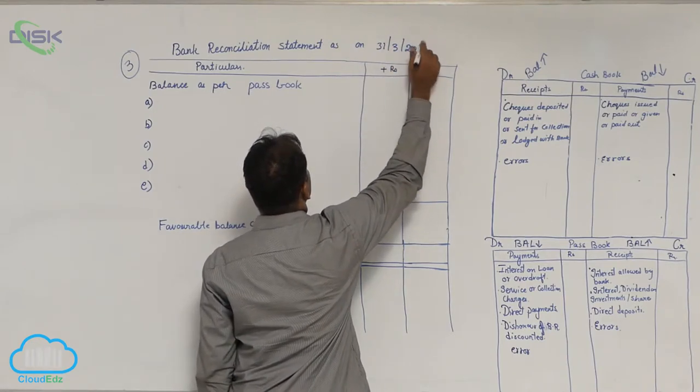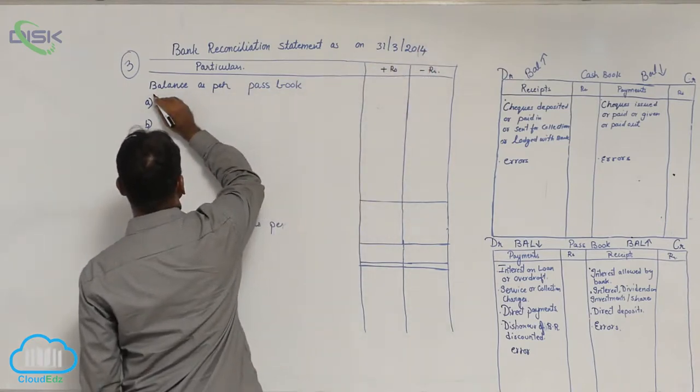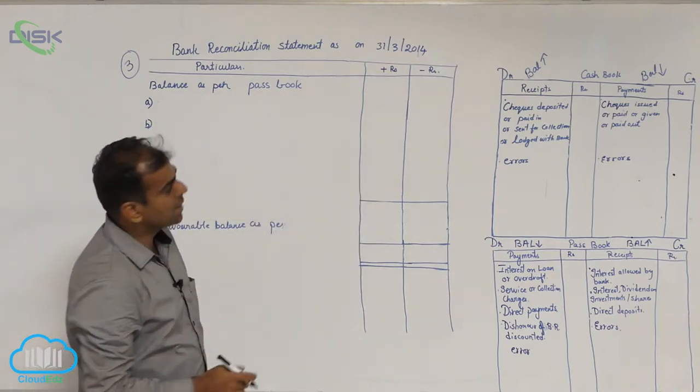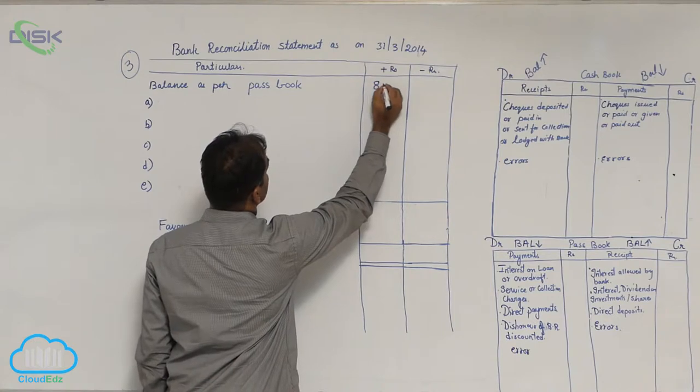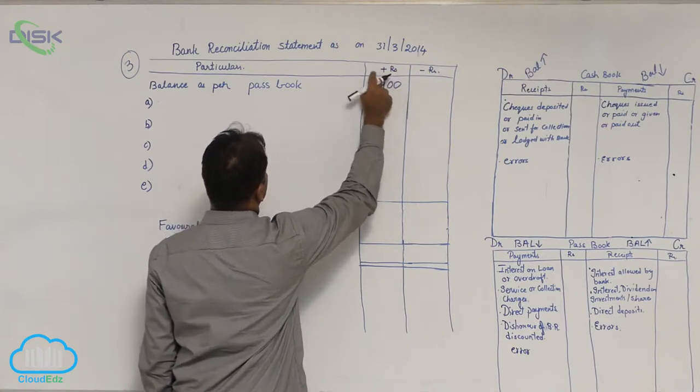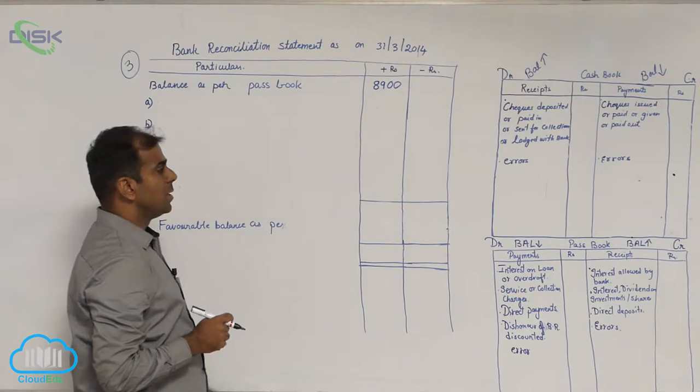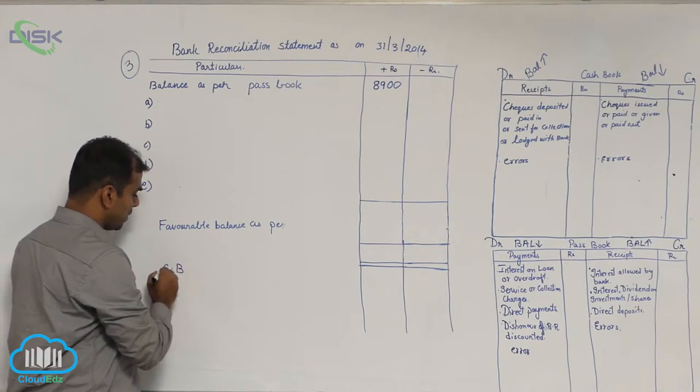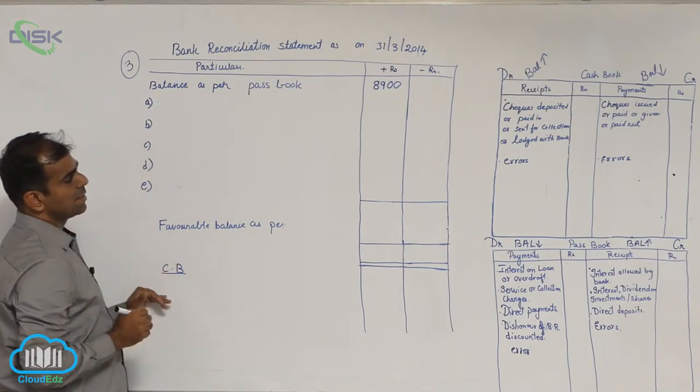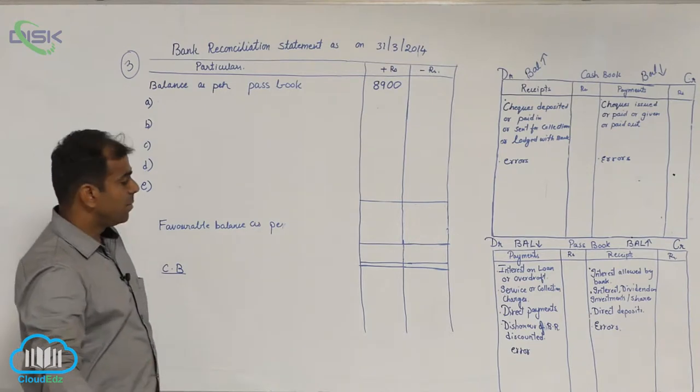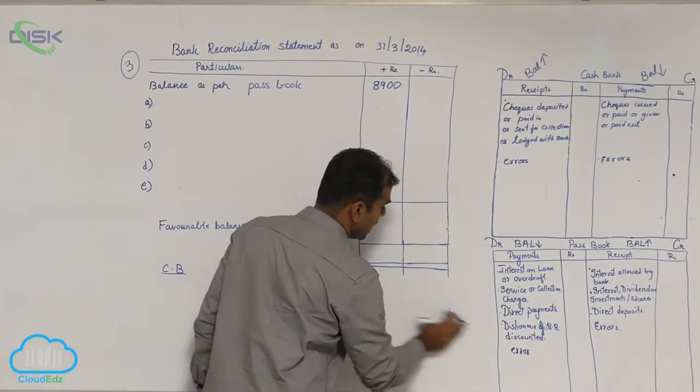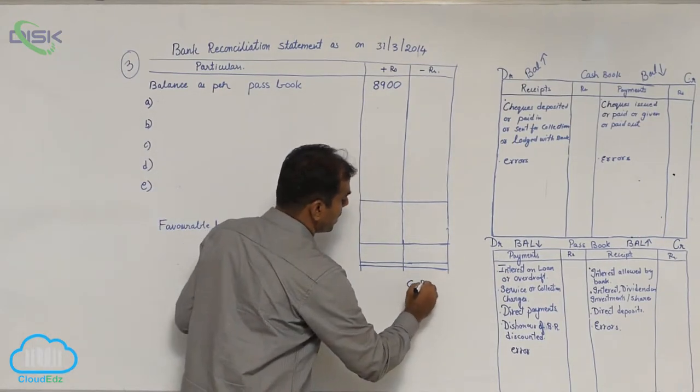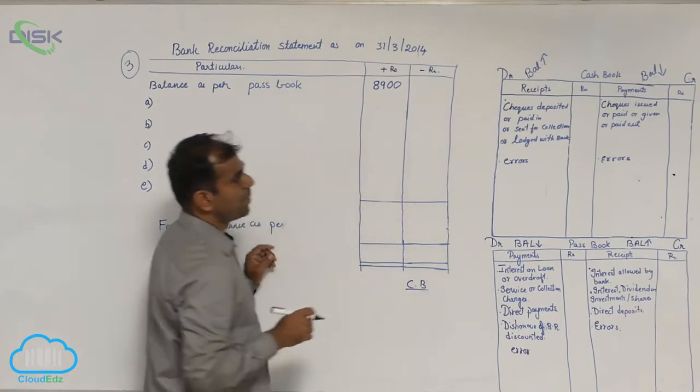And you are given which book balance? Again you are given passbook balance. So balance as per passbook, the amount being Rs. 8,900. Since it is a favorable balance, we are going to write it in plus column. So what is your target? I am writing here my rough cashbook. You have to find out cashbook balance because of the reason of the whatever transactions are given to you.